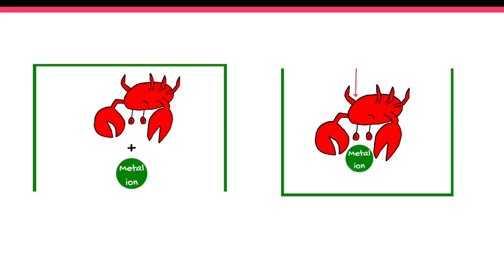And we will come to what it does with them, but basically imagine in your mind — and you will see later in the video — that the chelator hovers over the metal ion and binds it between its claws.